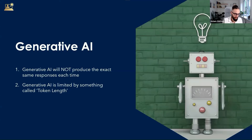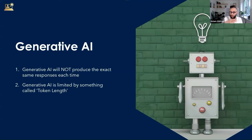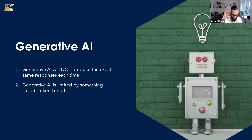Let's move on to generative AI. We've looked at some data, now we're going to look at use cases of generative AI and demystify some concepts. Two things to internalize: generative AI will not produce the exact same responses each time you ask the same question — unless you're using it via an API — there's going to be variability. Generative AI is also limited by something called token length. All that stuff we did with thousands of rows of data — not a good use case for generative AI. You're limited by how much data the AI platform can absorb in one go, though it is getting better.